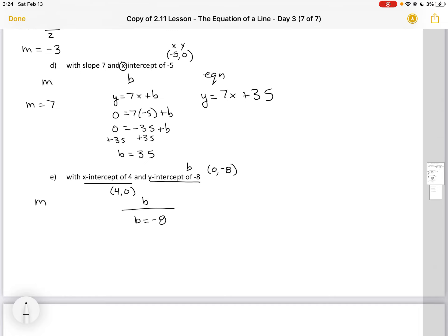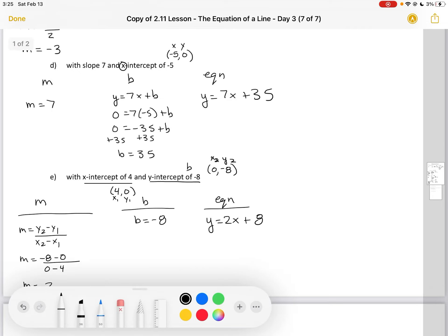Now that I know those two points, I can use that to find my y-intercept. So x1, y1, x2, y2. Now I can use my formula to solve for m. Minus 8 minus 0 and 0 minus 4 is going to give me a slope of 2. Now that I have both of those characteristics, I can write my equation: y equals 2x minus 8.